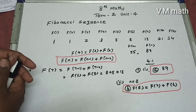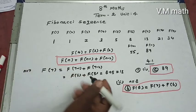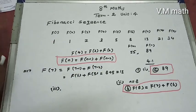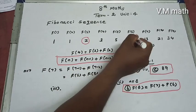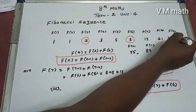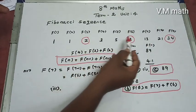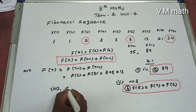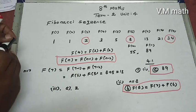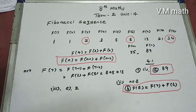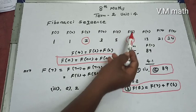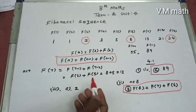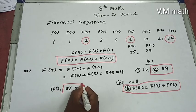Third question: Every third number of the Fibonacci sequence is a multiple of what? The third numbers are f(3) = 2, f(6) = 8, and f(9) = 34. All of these are multiples of 2. So the answer to question 3 is option A — multiple of 2.